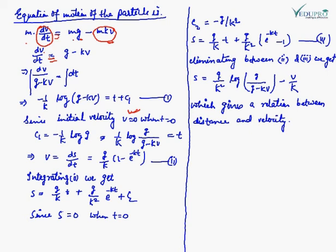Initially velocity is 0 when time is 0, so substituting T = 0 and V = 0, the value of C1 is −(1/K) log G. Putting this C1 value back into the equation gives (1/K) log(G / (G − KV)) = T.